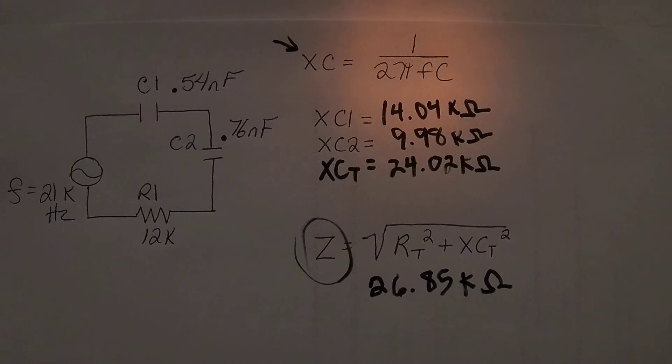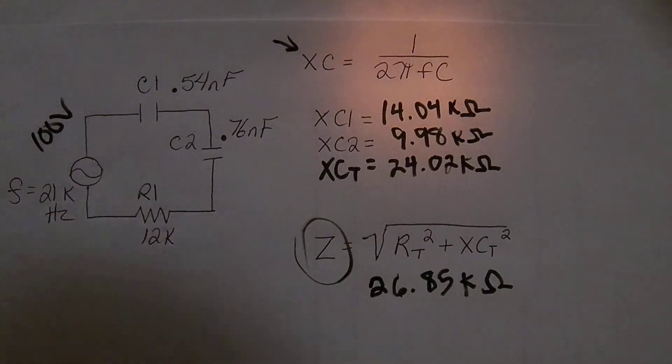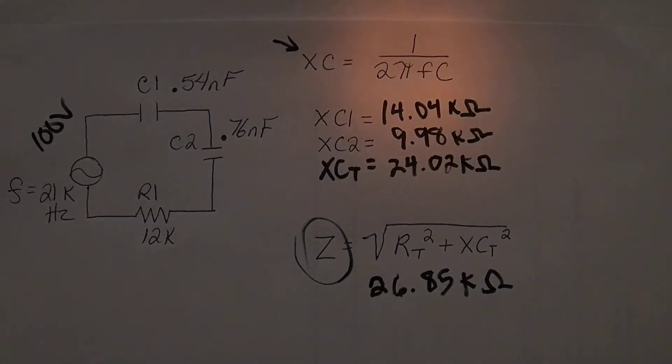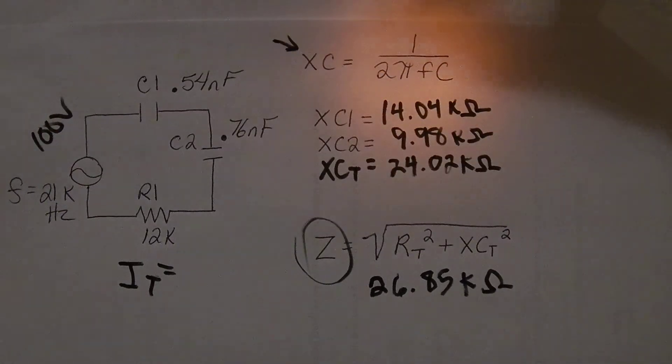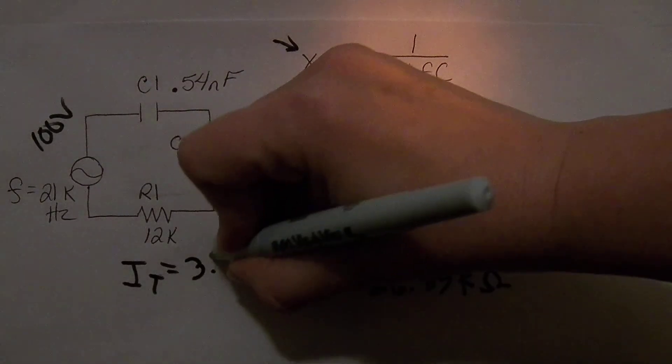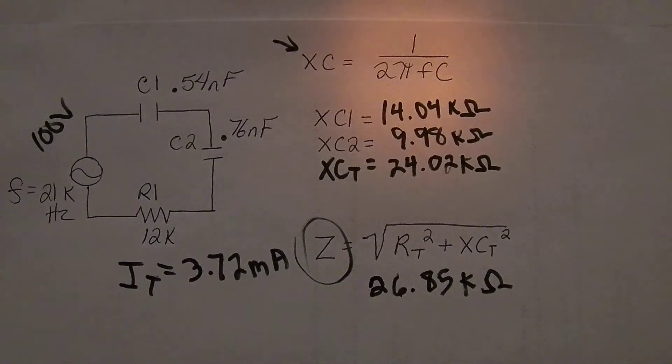So once I have total impedance, I can get a total current. So if this had, we will say, 100 volts applied, then we would take 100 divided by our 26.85 kilo ohms, and we would get a total current or an IT of 3.72 milliamps.